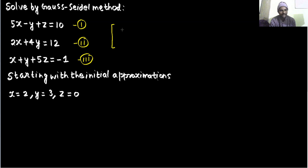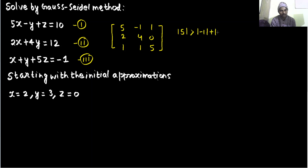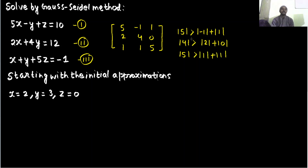If you make the coefficient matrix, it will look like: 5, minus 1, 1 in the first row; 2, 4, 0 in the second; and 1, 1, 5 in the third. In the first row, mod of 5 is clearly greater than mod of minus 1 plus mod of 1. In the second, mod of 4 is clearly greater than mod of 2 and mod of 0. In the third, mod of 5 is clearly greater than mod of 1 plus mod of 1. This is what diagonally dominant means. Our equations were already in that order — lucky for us.